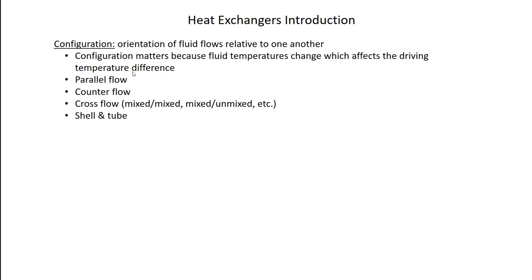Direct transfer heat exchangers are classified in different ways based on their configuration. What makes a heat exchanger complicated to analyze is that the hot fluid comes in at a high temperature and the cold fluid at a cold temperature, and they don't stay at those temperatures — the hot fluid temperature drops and the cold fluid temperature rises. The manner that this temperature difference evolves depends on the orientation of those flows relative to one another, which is captured in what we call the configuration. So we have parallel flow, counter flow, and cross flow.